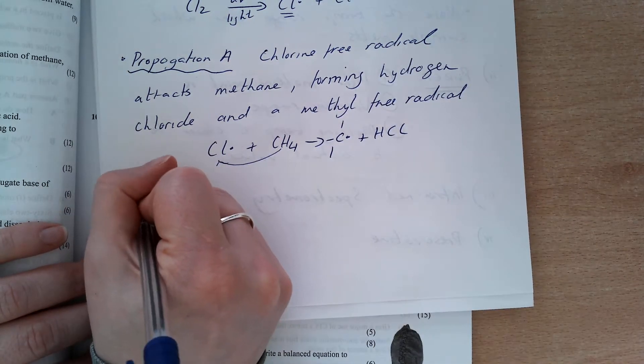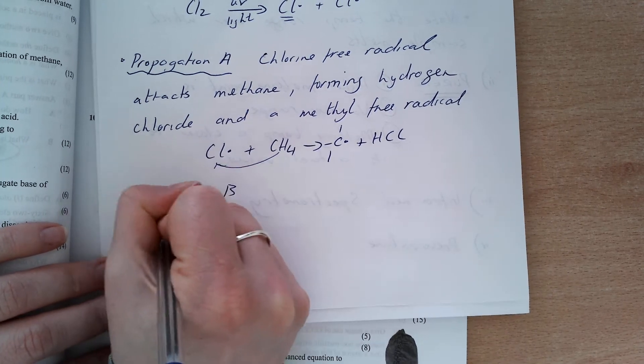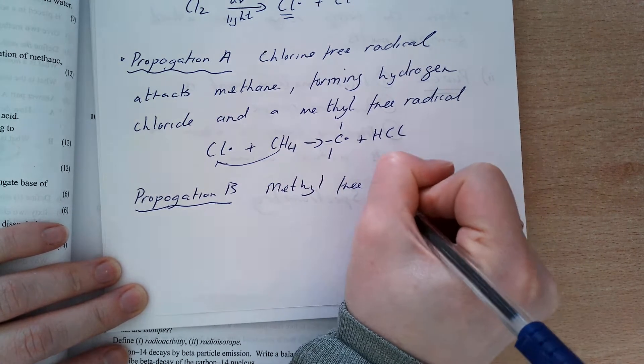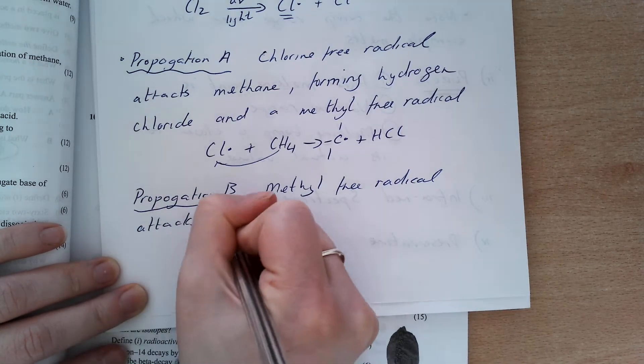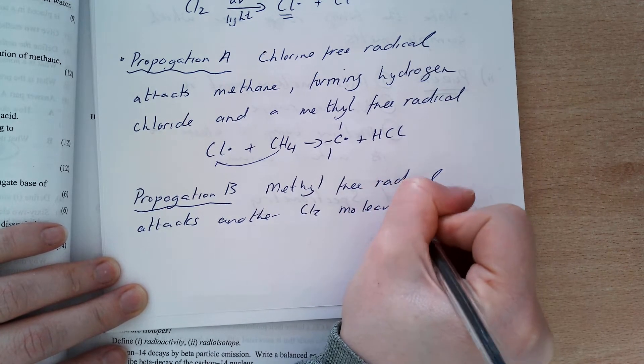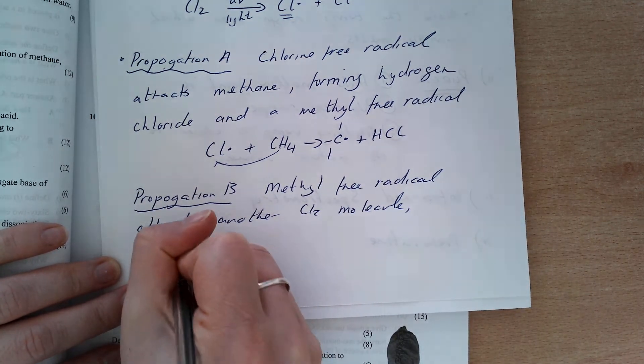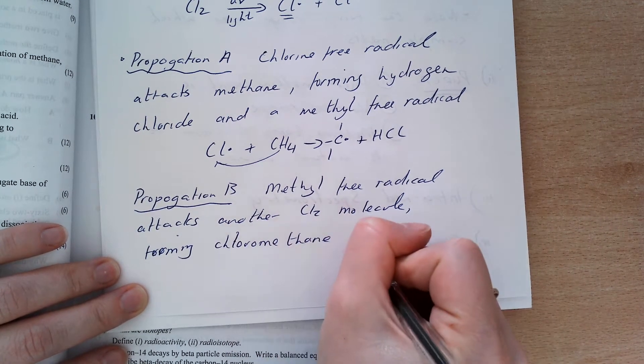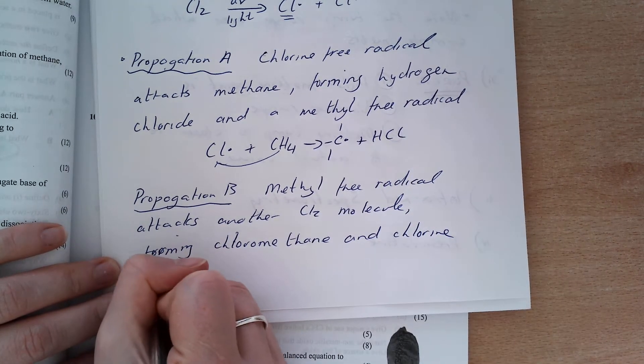Then we have propagation B, where the methyl-free radical attacks another chlorine molecule that's present, and it forms chloro-free radical. And it forms chloro-methane and a chlorine-free radical again.